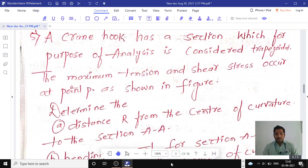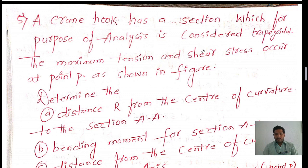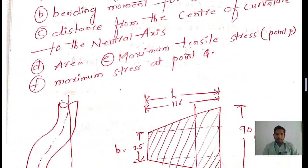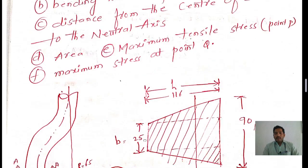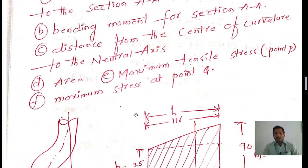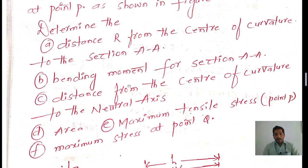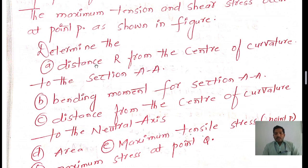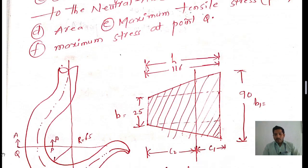A crane hook has a section which, for the purpose of analysis, is considered as trapezoidal. The maximum tension and shear stress occur at point P. At point P, the maximum tensile stress as well as the maximum shear stress is acting. In this problem we need to determine the distance r from the center of curvature to section A-A.